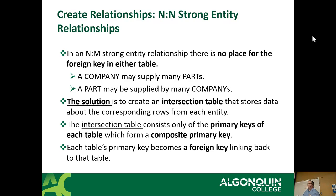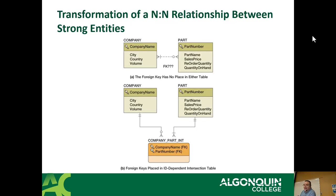When there's a many-to-many relationship, neither table should have the foreign key. The solution is to create something called an intersection table — it stores corresponding rows from each entity. It contains the primary keys of each table as a composite key, and the table's primary key also becomes a foreign key. So company-part many-to-many: a company can have many parts, each part can be bought by many companies.